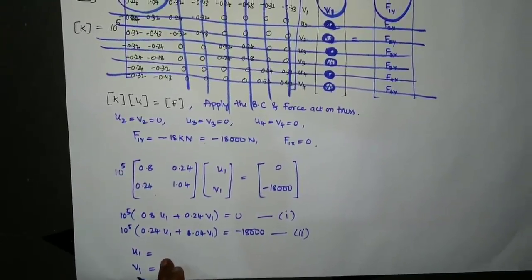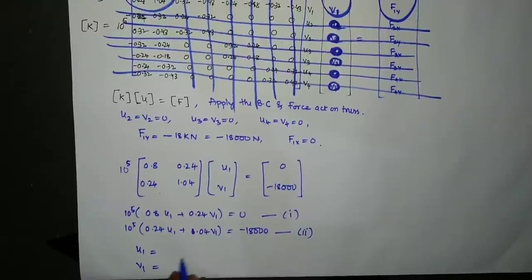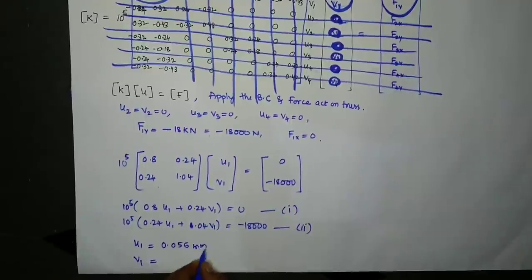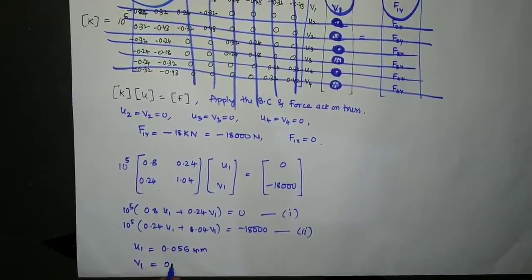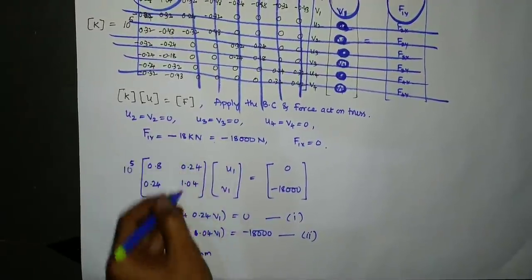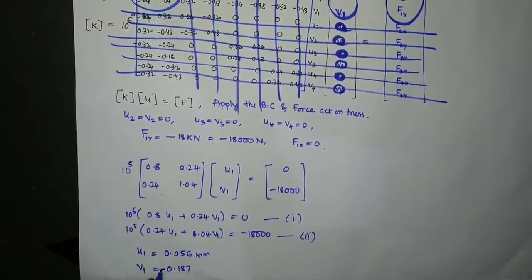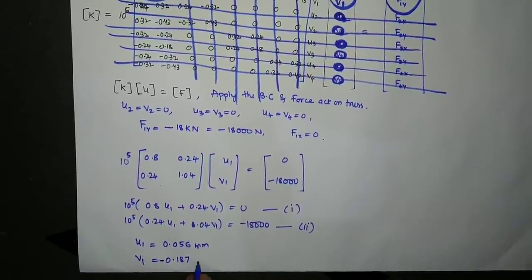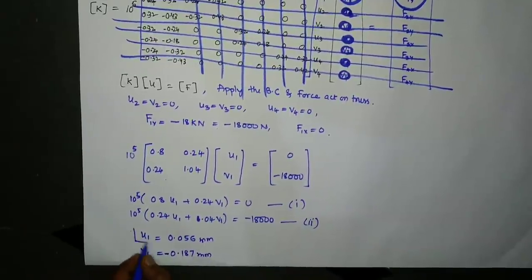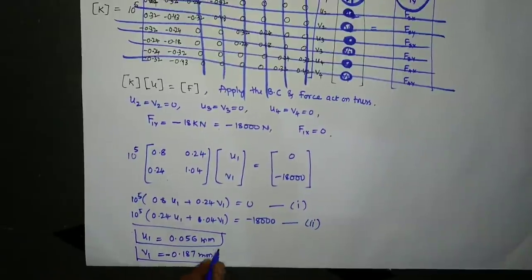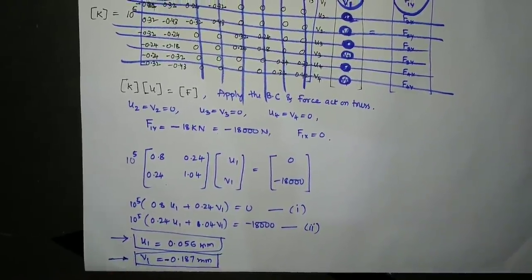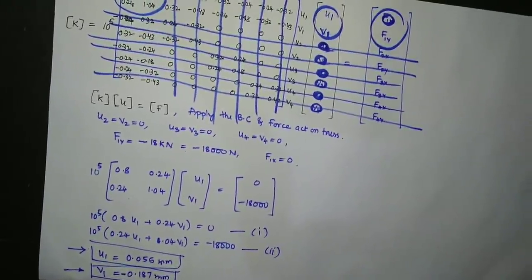Solving the two equations gives u1 = 0.056 mm (horizontal) and v1 = −0.187 mm (vertical). The negative sign for v1 indicates downward displacement, consistent with the downward applied load.